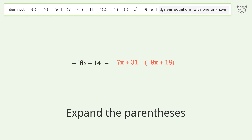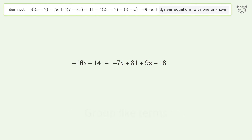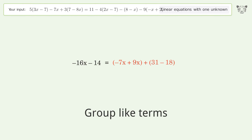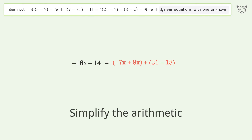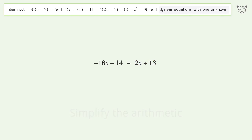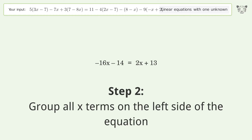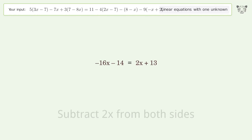Expand the parentheses. Group like terms. Simplify the arithmetic. Group all x-terms on the left side of the equation. Subtract 2x from both sides.